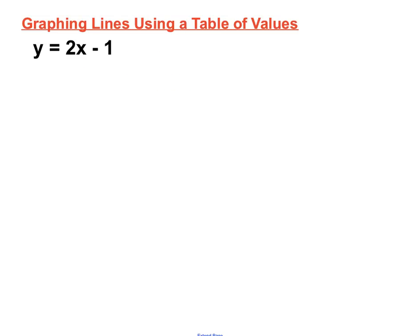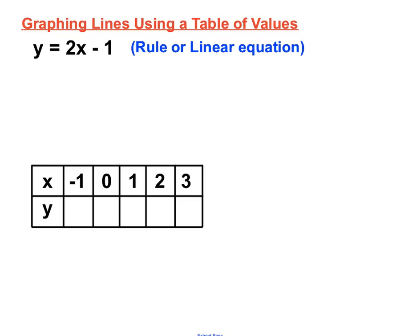If we're asked to graph this particular line equation, y equals 2x minus 1, there's a whole process we go through. That y equals 2x minus 1 is what we'd call the rule or the linear equation. It's the arrangement of numbers and letters that relates the x values and the y values together.